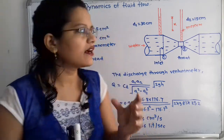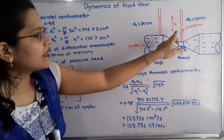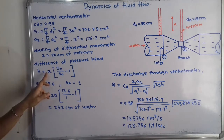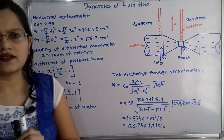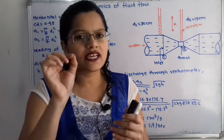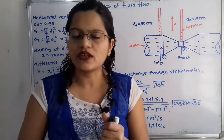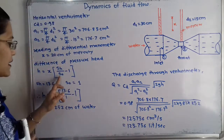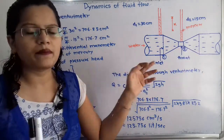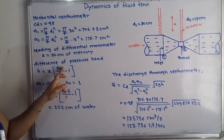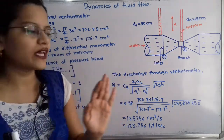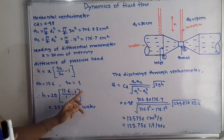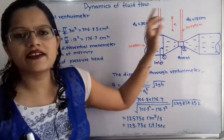The formula for h when mercury (heavier liquid) is used is: h equals x times (Sh/So minus 1), where Sh is the specific gravity of the heavier liquid and So is the specific gravity of the liquid flowing through the pipe. The specific gravity of mercury is 13.6 and the specific gravity of water is 1.